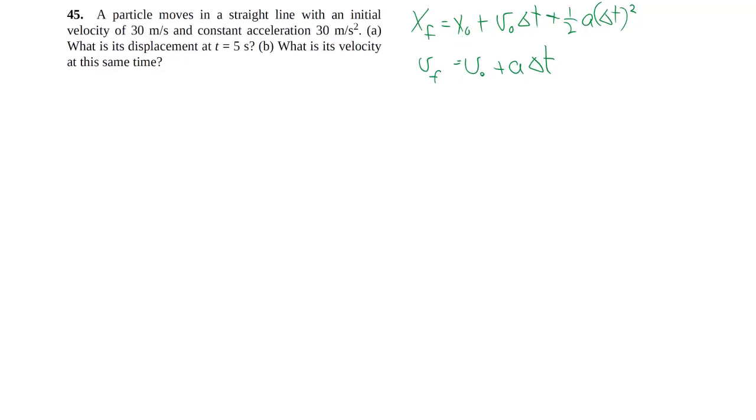So once we know what we're doing, the rest is pretty straightforward. Again, this should be review for you guys. So we have an initial velocity of 30 meters per second. The overall question is pretty themeless, just a particle moving around. We have an acceleration of 30 meters per second squared.